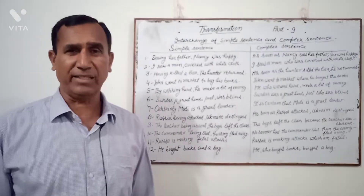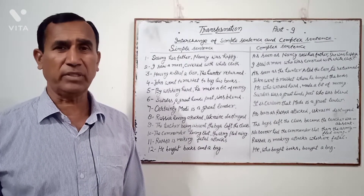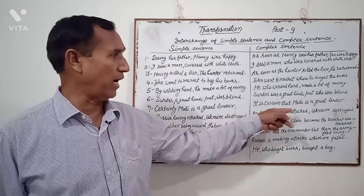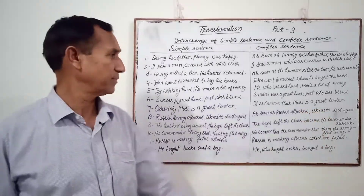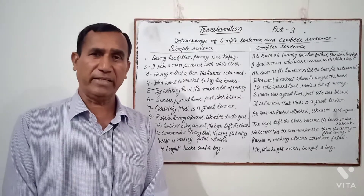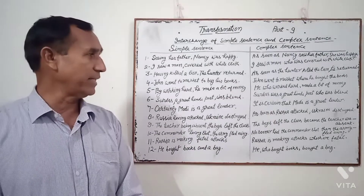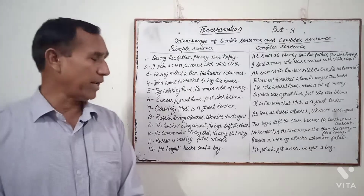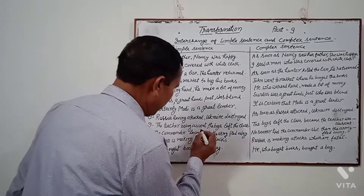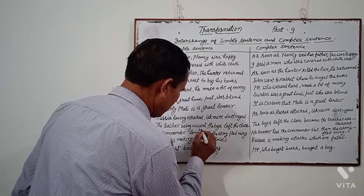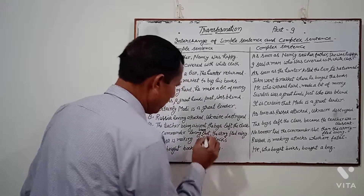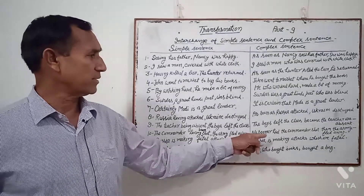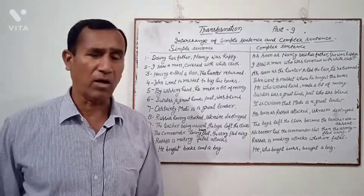Fifth example: "Certainly, Modi is a great leader." Complex: "It is certain that Modi is a great leader." Sixth example: "Russia having attacked, Ukraine destroyed." Complex: "As soon as Russia attacked, Ukraine destroyed." Seventh example: "The teacher being absent, the boys left the class." Complex: "Because the teacher was absent, the boys left the class." Eighth example: "The commander having been shot, the army fled away." Complex: "No sooner had the commander been shot than the army fled away."